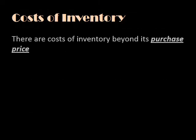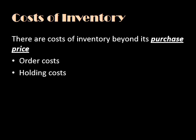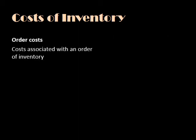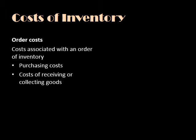When we look at our inventory, there are costs associated with it. The most obvious is the purchase price, but there are also costs associated with the ordering of inventory and costs associated with holding inventory. Order costs are costs associated with making an order of inventory. They might be the purchasing costs — costs associated with our purchasing department — and there would also be costs of receiving or collecting the goods, such as carriage costs.